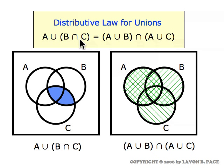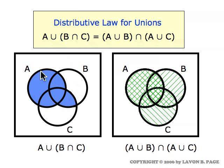Now let's visualize the set on the left side. First let's visualize B intersect C — the little blue football is B intersect C, the overlap of the B and C circles. If we union that with A, then we get that football plus everything that's inside of A. The part that's painted blue in the left picture is the same part of the Venn diagram as the part shaded with lines going both directions in the picture on the right. So that illustrates that the set on the left side of the equation is really the same set as the set on the right side.